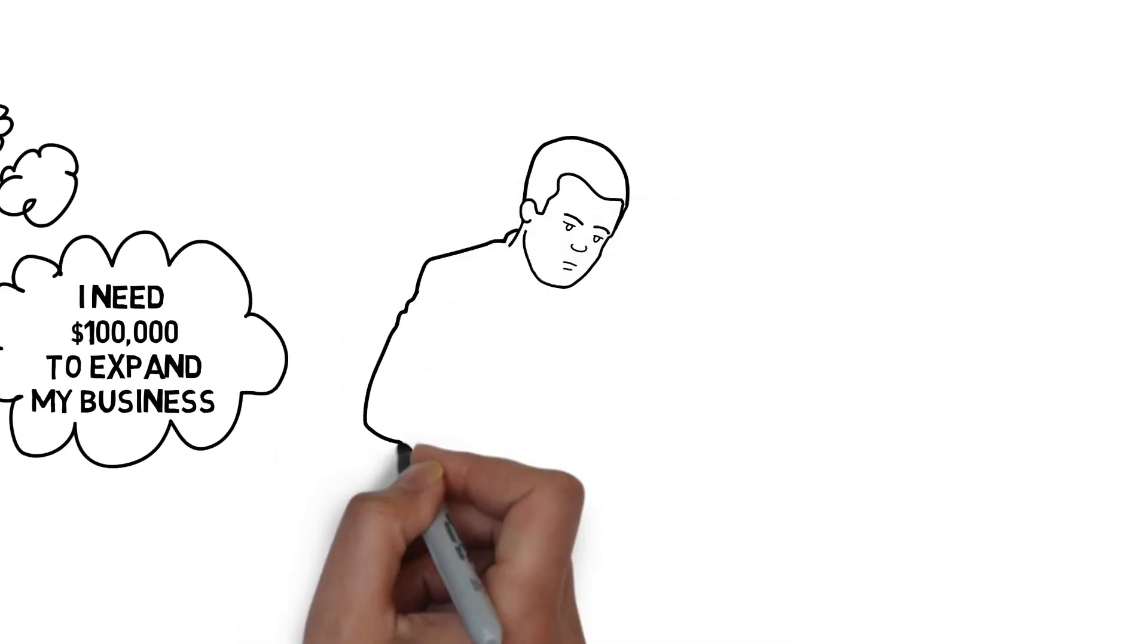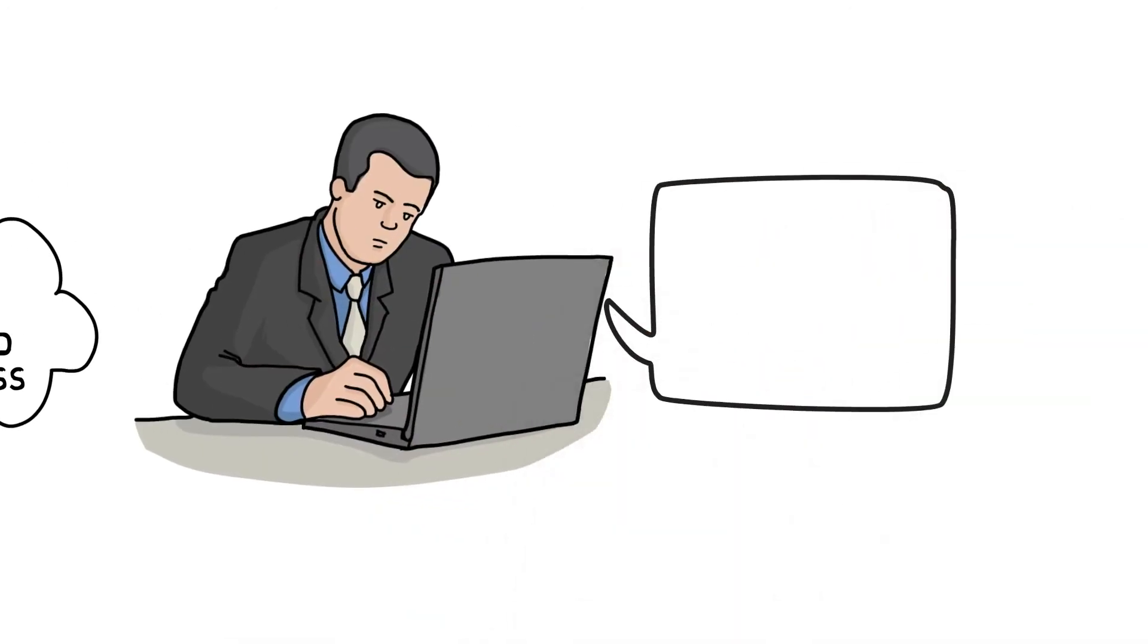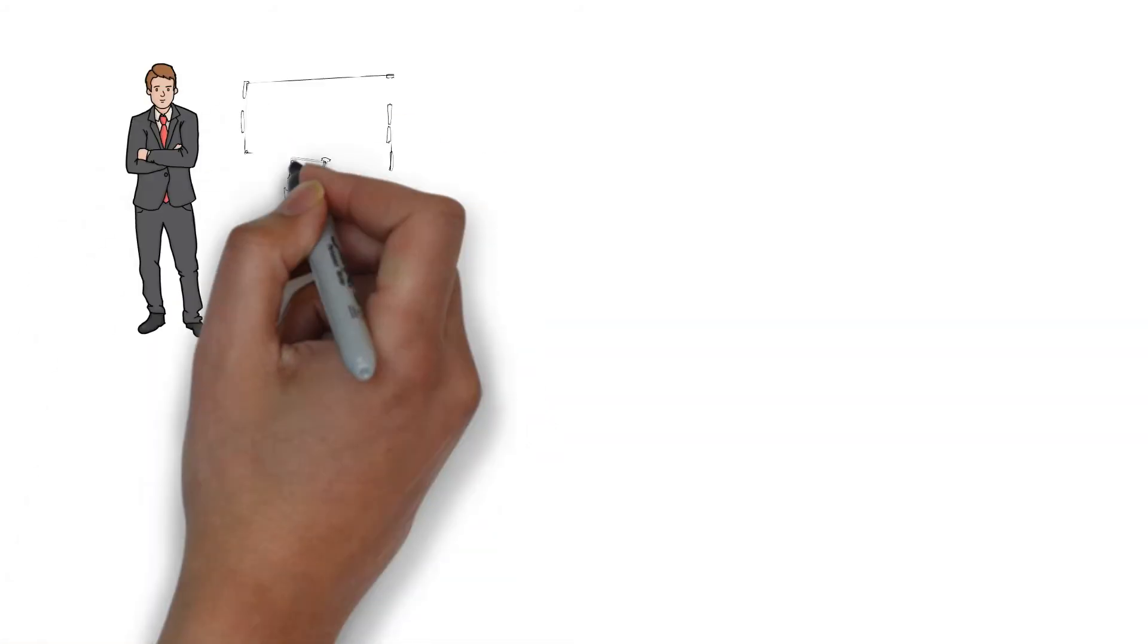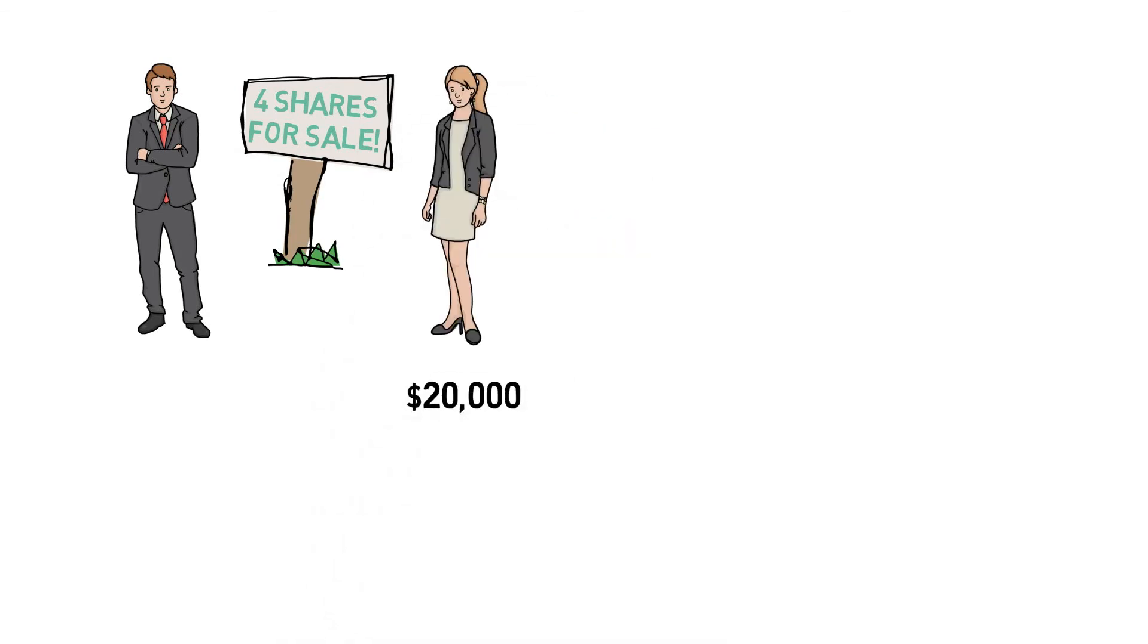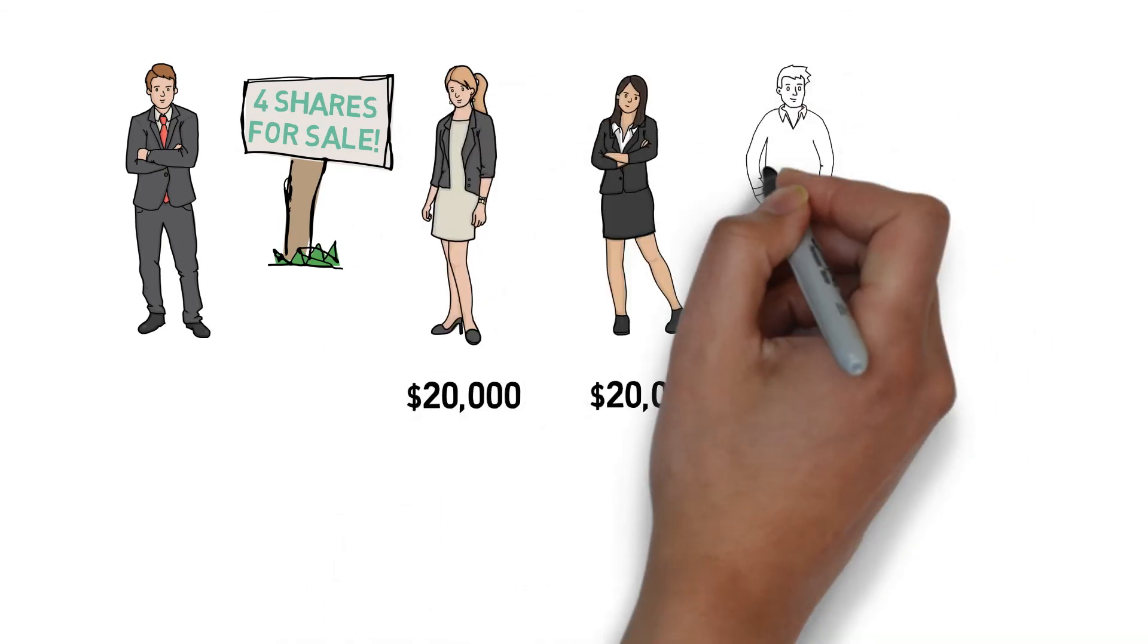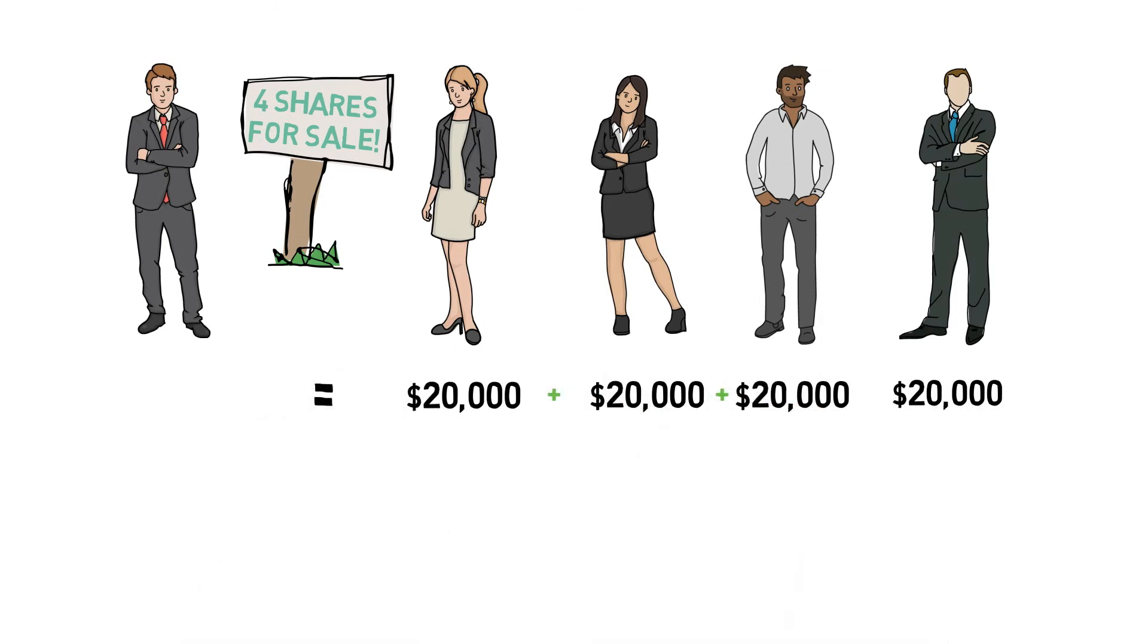Currently, he has $20,000 from his store profits. John doesn't want to go to a bank and get a loan. So he goes to his friends and tells them that he has divided his company into five shares and four of these five are for sale. Looking at the business prospects and earnings, four of his friends were interested to buy these shares for $20,000 each.